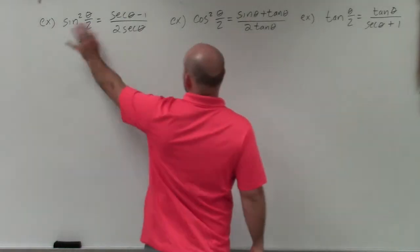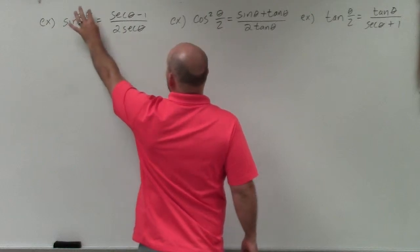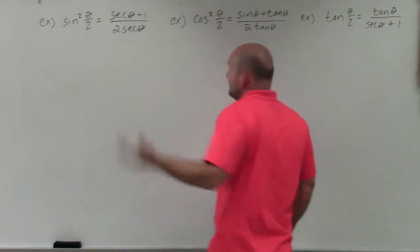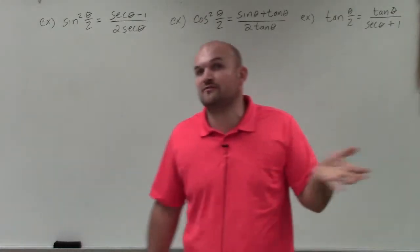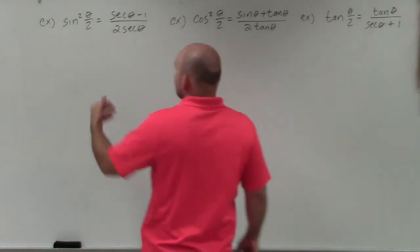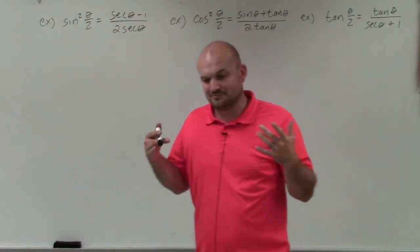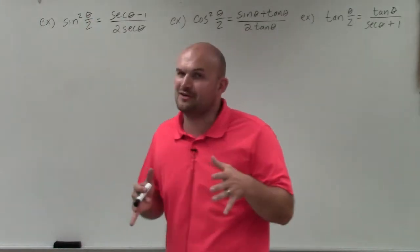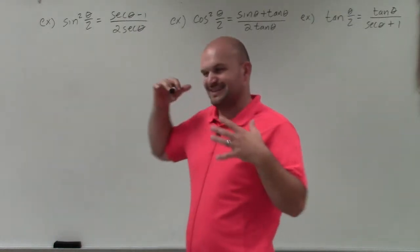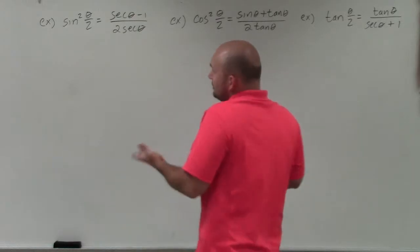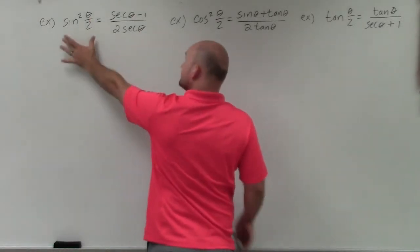You can see here I have sine squared of theta over 2 equals secant of theta minus 1 divided by 2 secant of theta. Usually, I would say get rid of the fraction so it can look like the other one. However, in this case, theta divided by 2 is not always easy to rewrite as the half angle formula with the square root could probably be a little bit more difficult. So even though it's definitely possible, I'm going to start on the left side in this case.